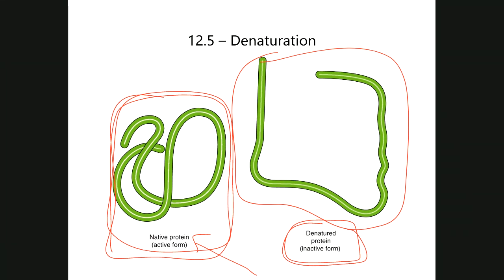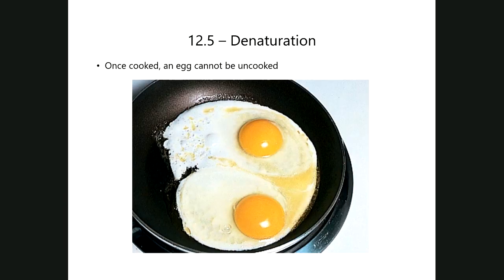Denaturation is an irreversible process. Just as you cannot uncook an egg — where heat denatures the proteins and they cannot return to their original state — the same happens with proteins in the human body. If you're exposed to chemical agents that change the pH of your bodily fluids, that causes proteins to lose their shape and they can no longer perform their job.